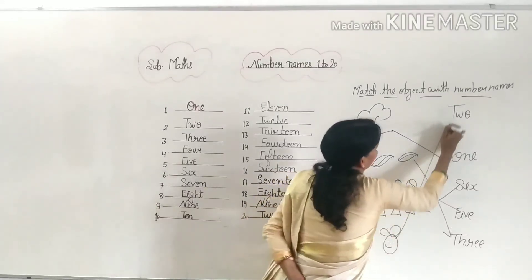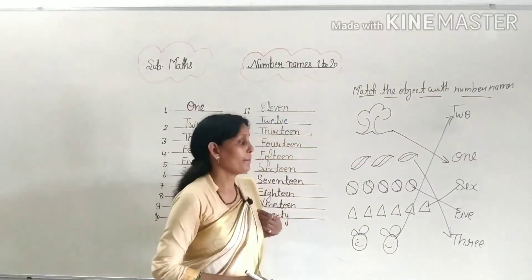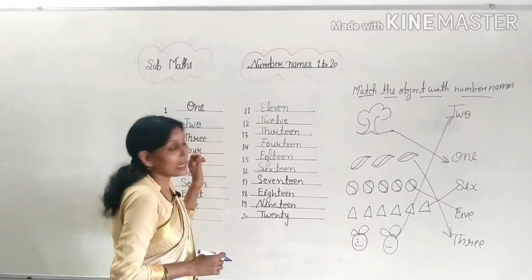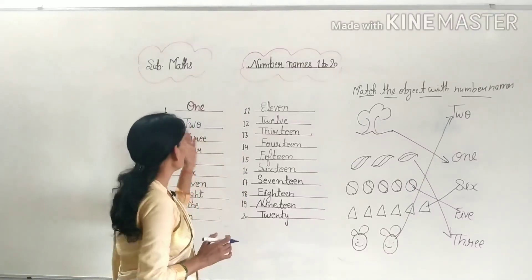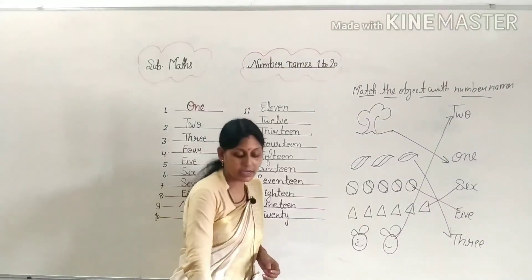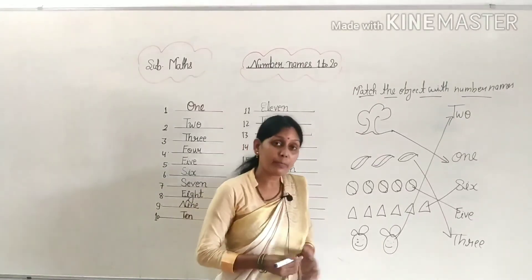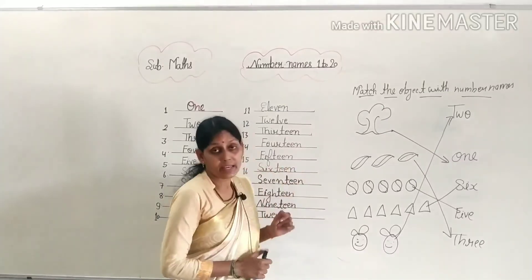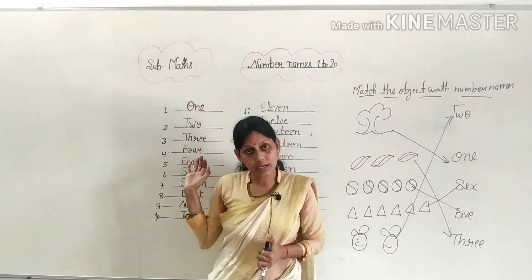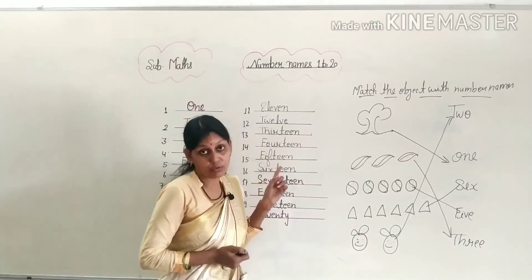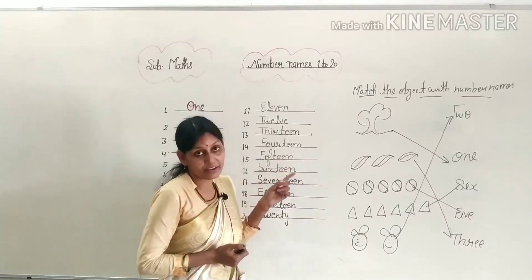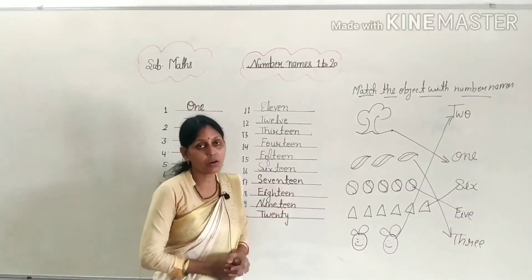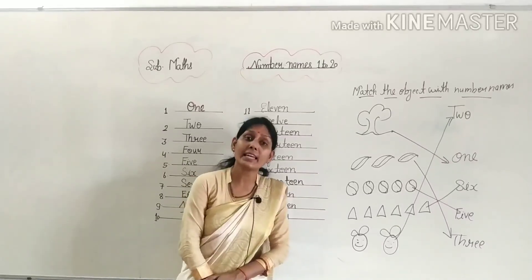This is what you studied in LKG — matching objects with number names. First of all, you need to learn the spellings. I have now told you the spellings from 1 to 20. I hope this will help you understand, and you will learn these spellings at home. Remember especially 15 — don't write it incorrectly. Okay students, I hope this was helpful. We will see you in the next video. Thank you, have a nice day.